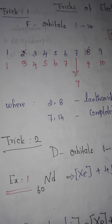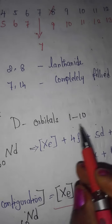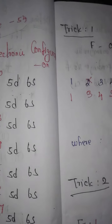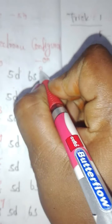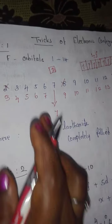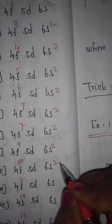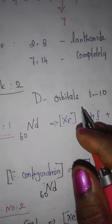Trick number 2: how to fill D orbitals easily. For D orbitals, use some calculations. First, you already know S orbital is filled with 2 electrons — the 6s2 is essentially already determined. The S orbital only fills with 2 electrons.